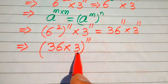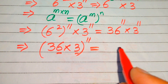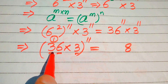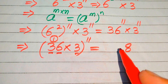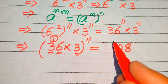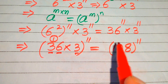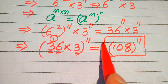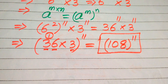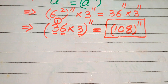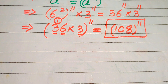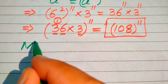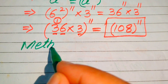Now we multiply: 3 times 6 is 18, write 8 and carry 1; then 3 times 3 is 9, plus 1 gives 10. So we get 108 to the power of 11. This is the final simplified form — the final answer obtained from the first method. Now we solve the problem again using the second method.